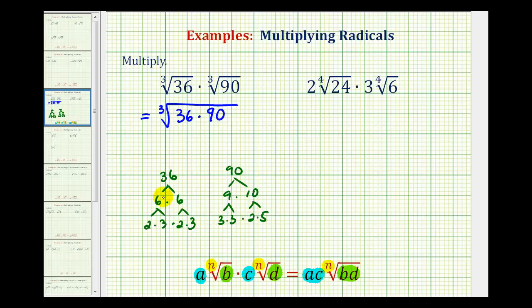So this product would consist of all of these prime factors. So we'll have the cube root of 1, 2, 3 factors of 2, and we have 1, 2, 3, 4 factors of 3, and a factor of 5.